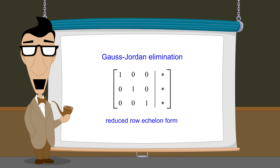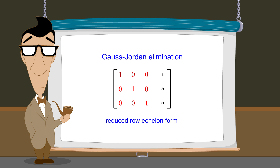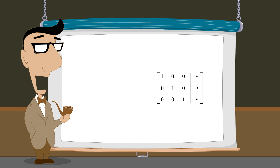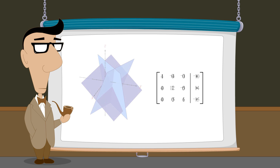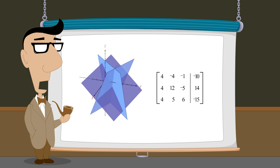If the system of equations has a single unique solution, the end result will be a matrix whose coordinate entries are all ones along the main diagonal and zeros everywhere else. Since a system of linear equations in three variables is graphically represented by a collection of planes, following how these planes change their orientation with each row operation can help give us an intuitive understanding of how the transformation to reduced row echelon form works.